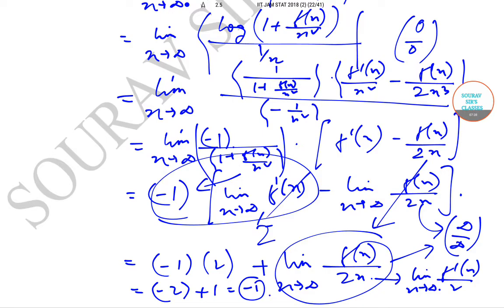Today we have solved question number 53 from the IIT JAM mathematical statistics question paper of year 2018. We will be solving the next questions in subsequent videos. Till then, keep watching Software's classes videos for more solutions and content. Thank you very much.